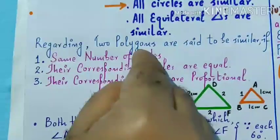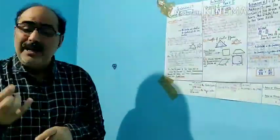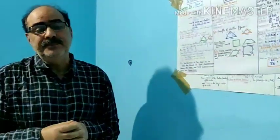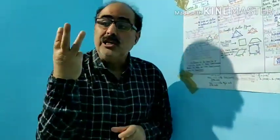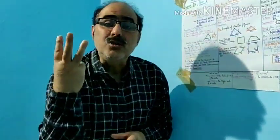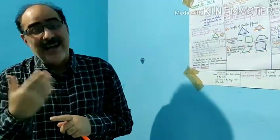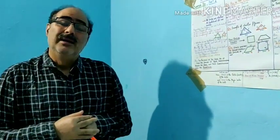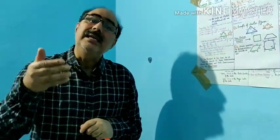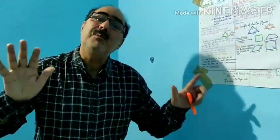Regarding two polygons — first of all let us understand a polygon. Polygon की पहचान क्या है: यह कोई भी figure जिसकी three sides हों, या more than three sides हों, वो polygon है। Triangle is a polygon, a quadrilateral is a polygon, a pentagon, a hexagon, an octagon and so on — these are all polygons.